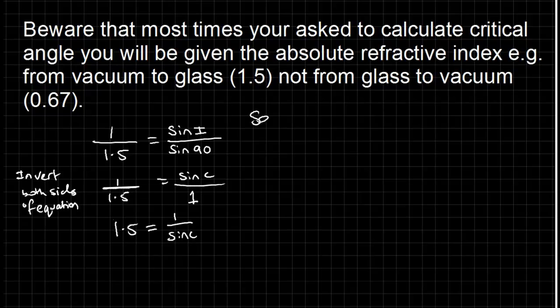So you can generally say that mu, or refractive index, is equal to 1 over sine c, and it's c for critical angle.